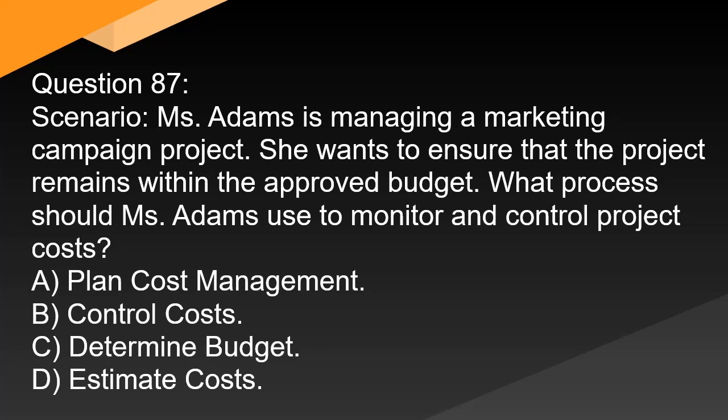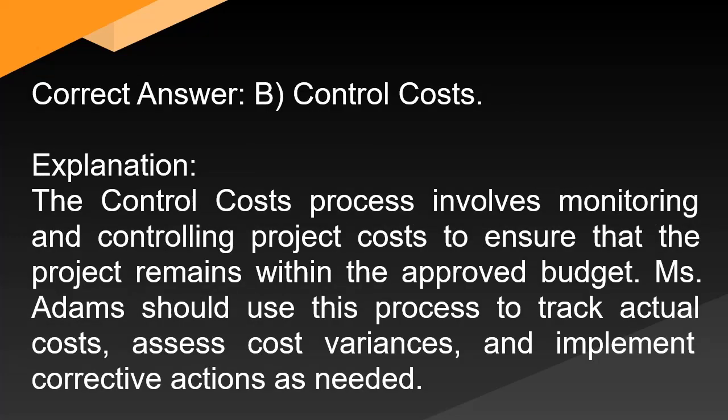Question 87: Ms. Adams is managing a marketing campaign project. She wants to ensure that the project remains within the approved budget. What process should Ms. Adams use to monitor and control project costs? A. Plan cost management. B. Control costs. C. Determine budget. D. Estimate costs. Correct answer: B. Control costs. Explanation: The control costs process involves monitoring and controlling project costs to ensure the project remains within the approved budget. Ms. Adams should use this process to track actual costs, assess cost variances, and implement corrective actions as needed.